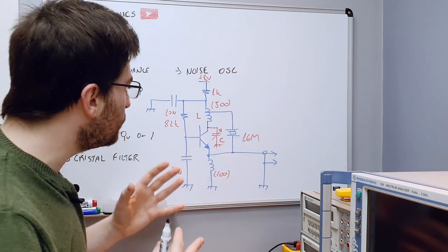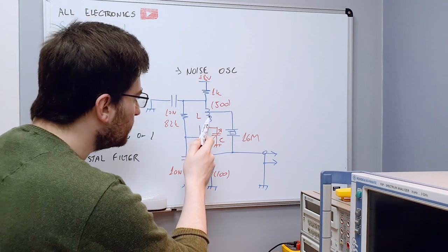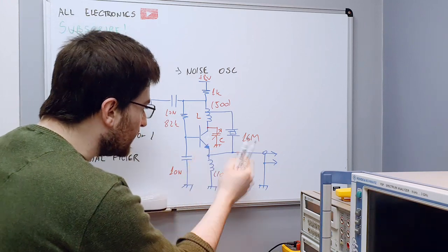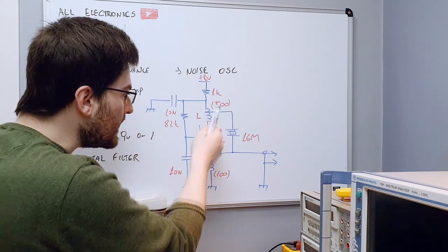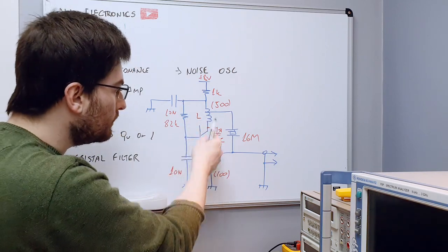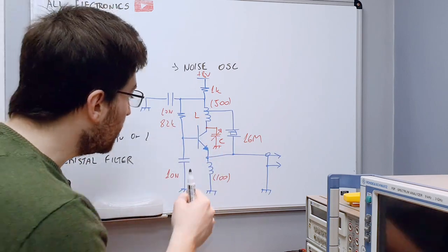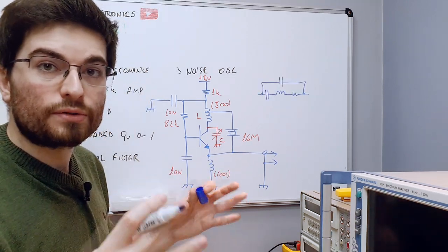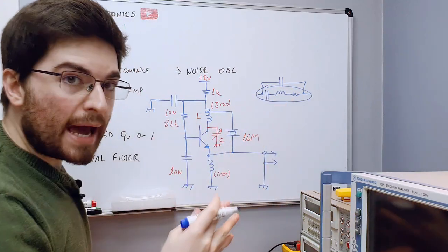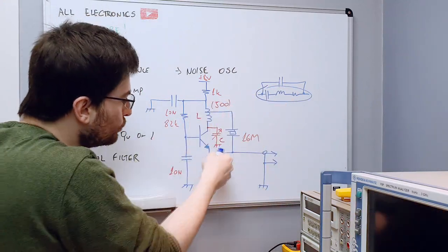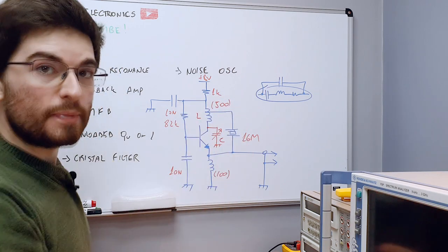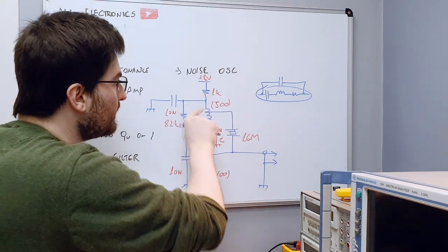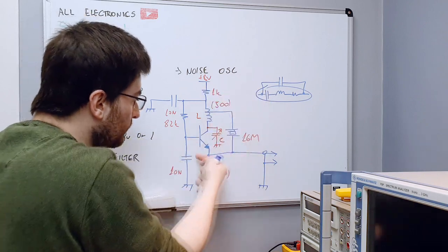To make this oscillate, we need to feed part of the output signal back to the input. The input of a common base topology is the emitter — the signal enters the emitter, modulating the emitter current, and the transistor reflects this modulation to the collector. We are going to use the crystal at series resonance, using this path here, to feed part of the output signal back to the input, creating the oscillation behavior. We need to provide positive gain and the correct phase to allow oscillation, and this feedback action is made by the series resonance path of the crystal.